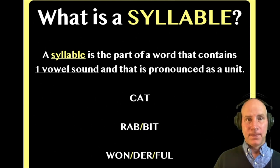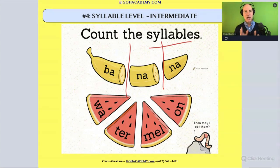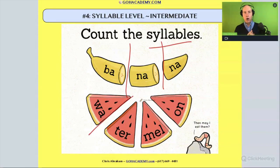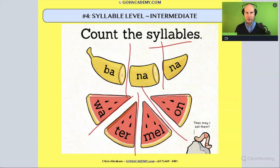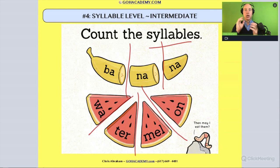Now that we know what a syllable is, we can see that 'banana' has three unique vowel sounds — 'ba-na-na' — or 'watermelon' has four — 'wa-ter-mel-on.' I have these in a nice visual graphic on screen, but we don't need these pictures. Someone can just say 'banana' and you clap it out, or 'watermelon' — four syllables.